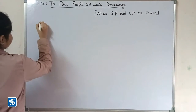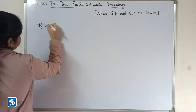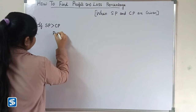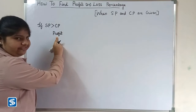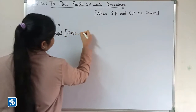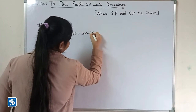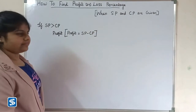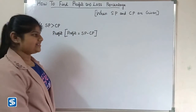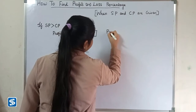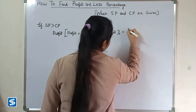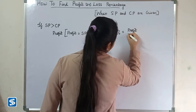If selling price is greater than cost price, then we have a profit. So profit is equal to selling price minus cost price. To find profit percentage when selling price and cost price are given, we use the formula: profit percentage is equal to profit divided by cost price multiplied by 100.